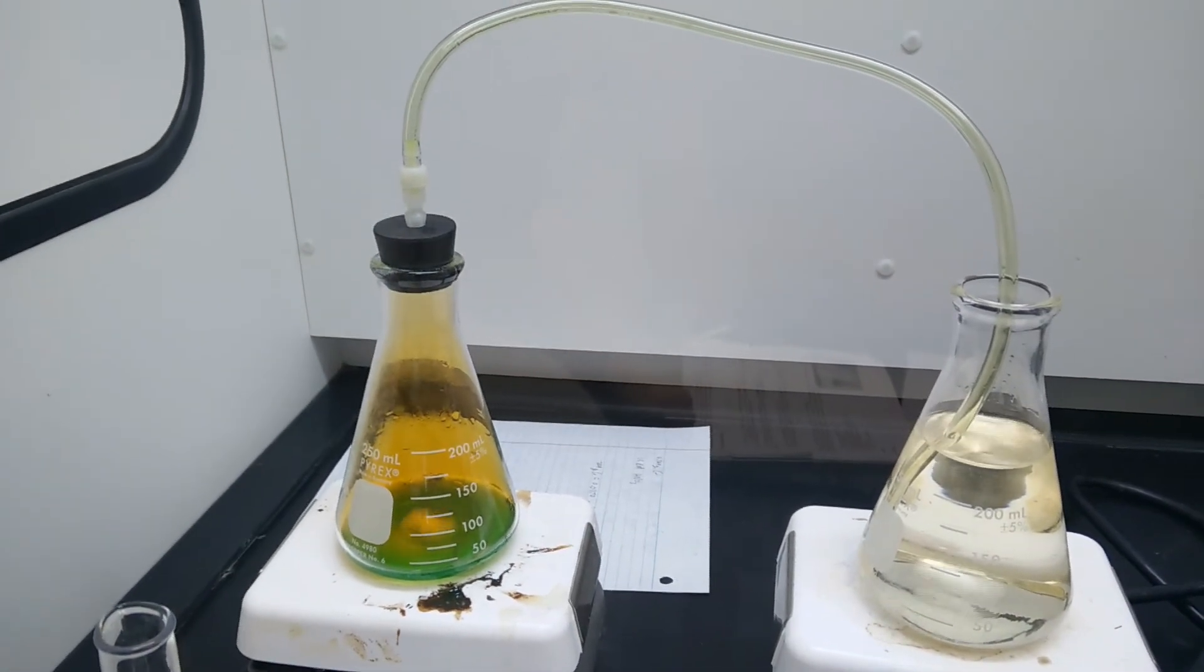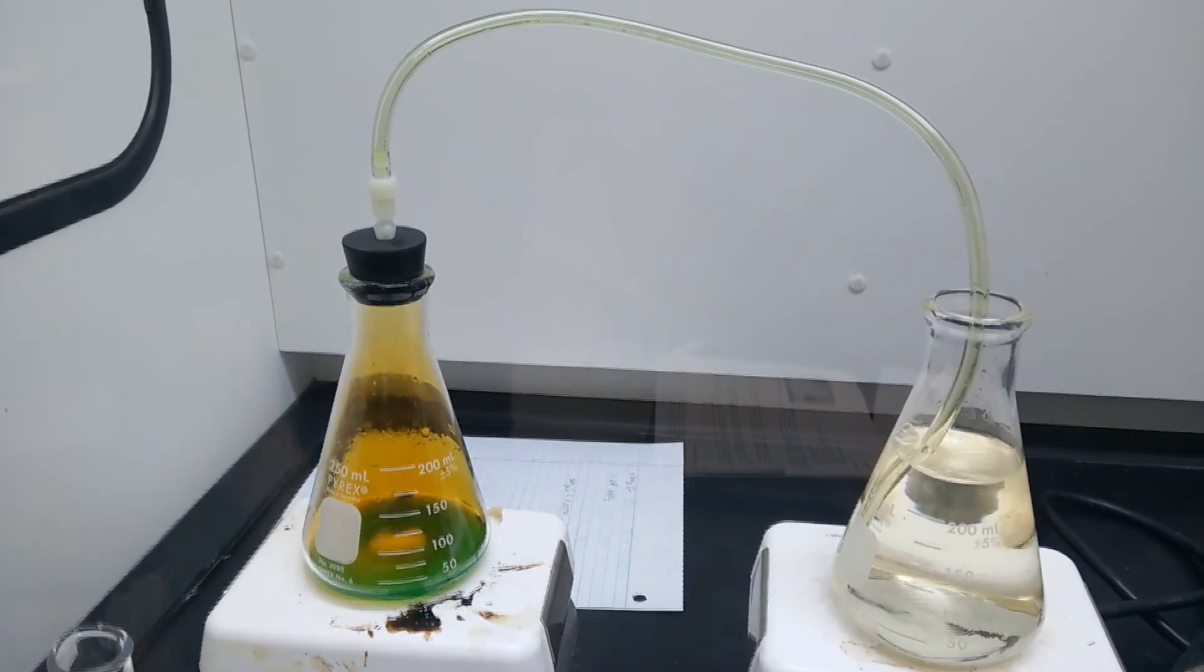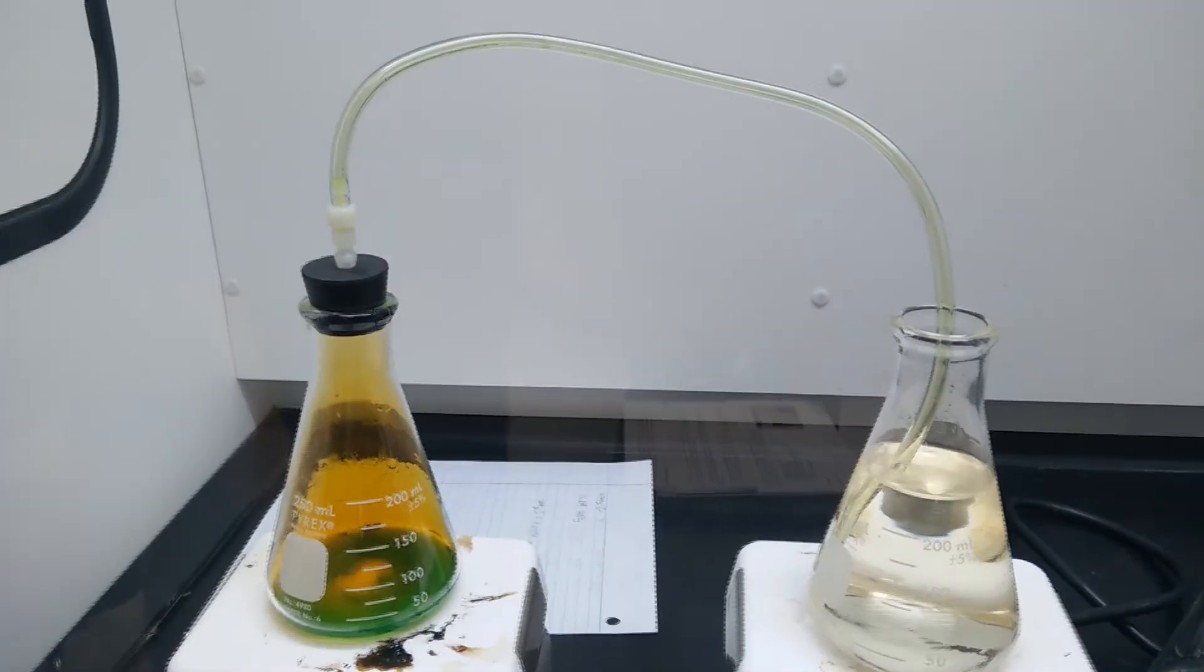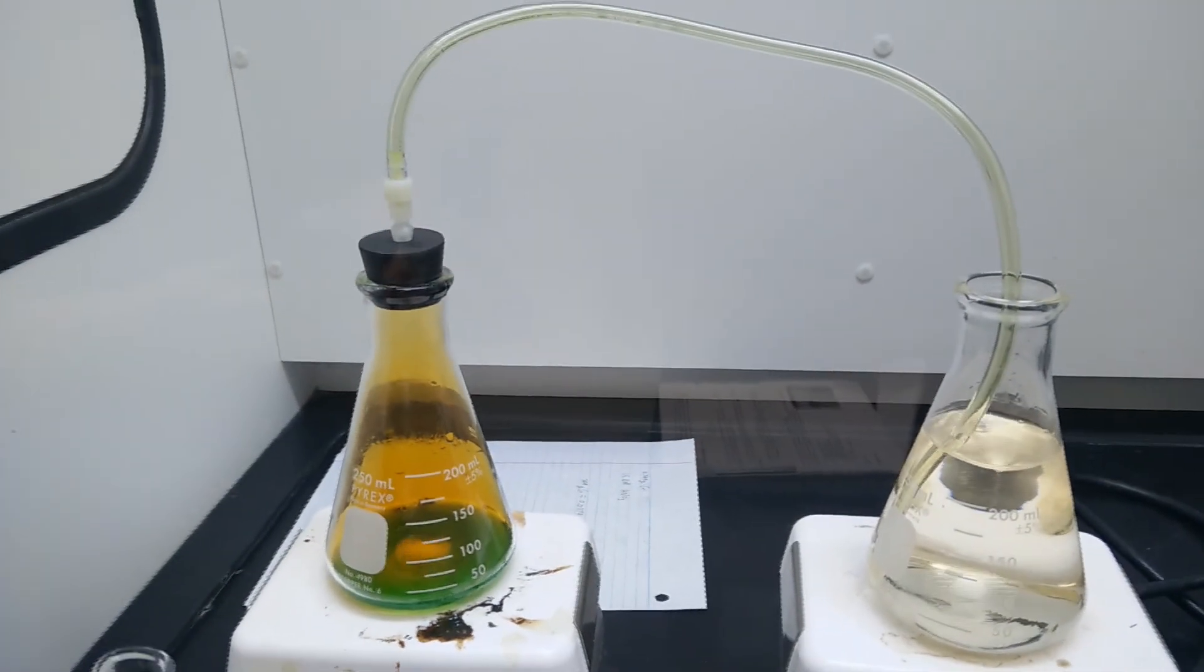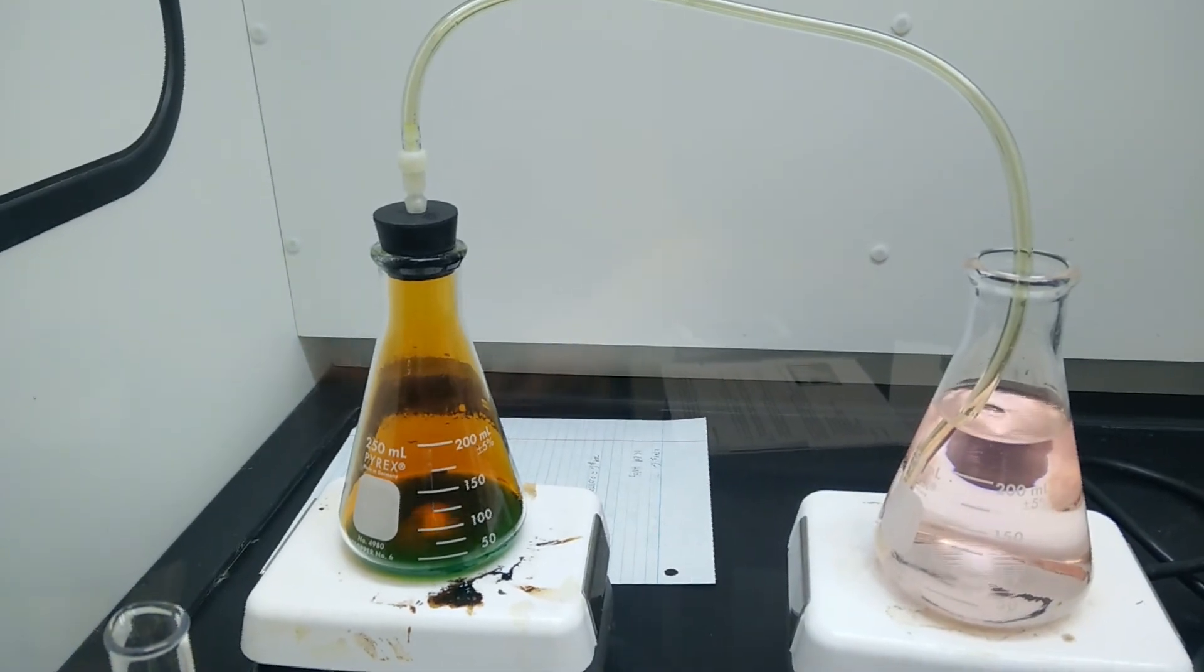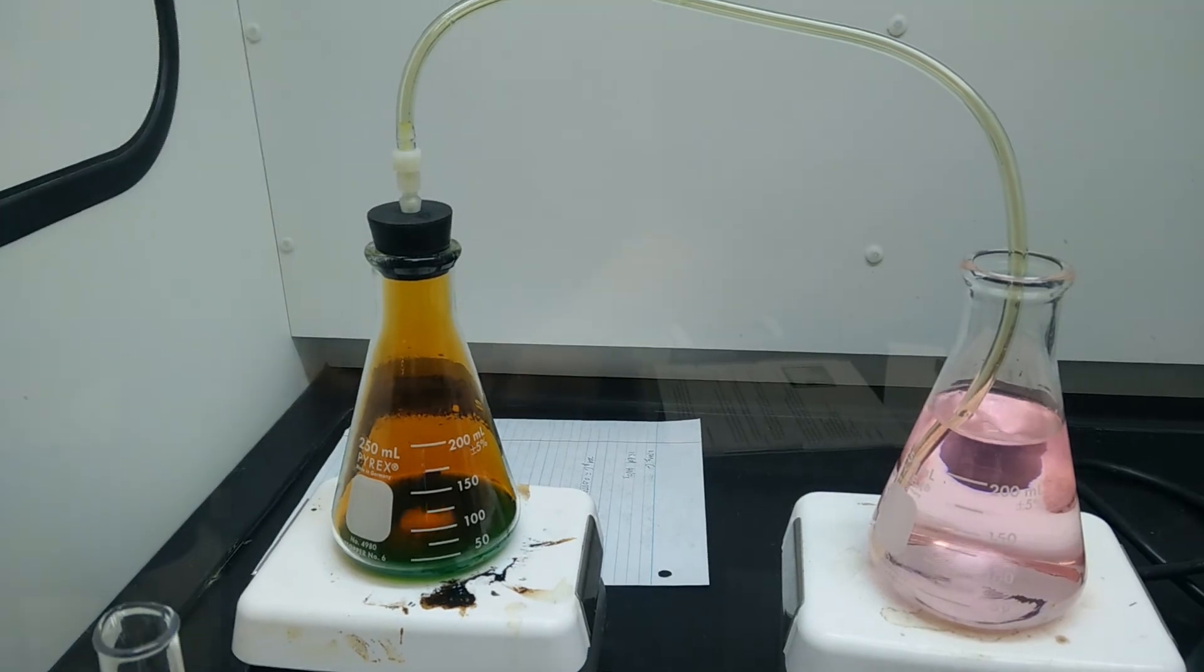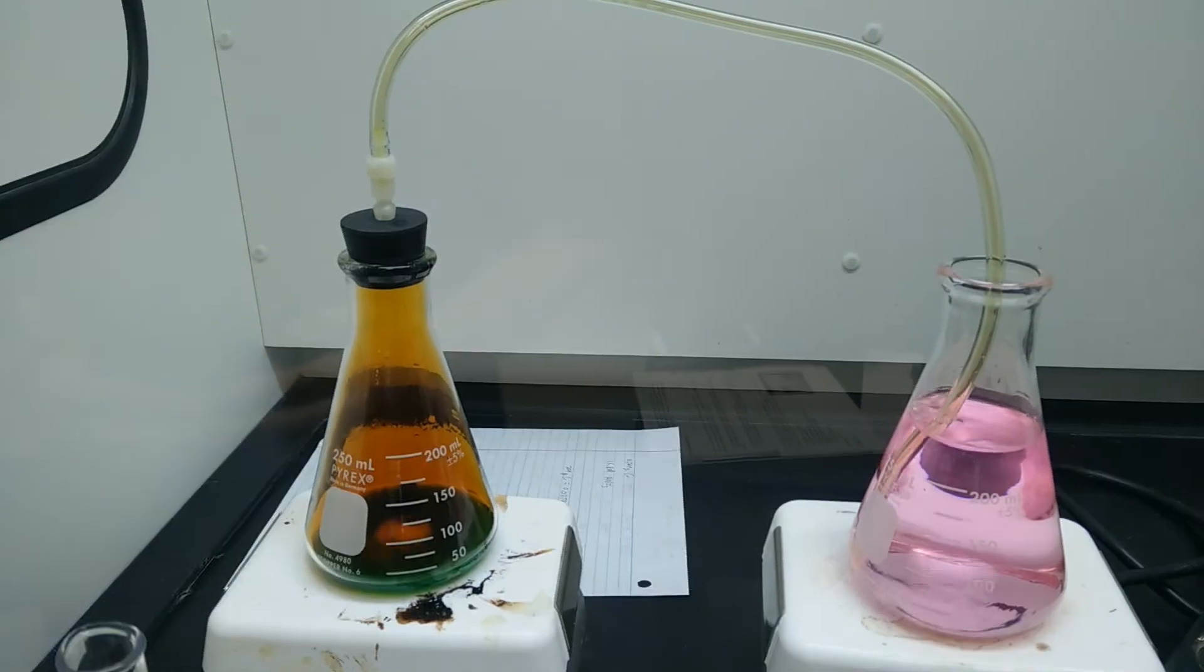But if you observe the bubbles in the second flask, you will see that they are colorless, not reddish brown. This is due to a reaction between nitrogen dioxide gas and water, which forms nitric acid and oxygen. In order to verify that an acid is indeed being formed in the second flask, the acid-base indicator methyl red has been added, which turns from yellow to red or pink when it is in an acidic environment.